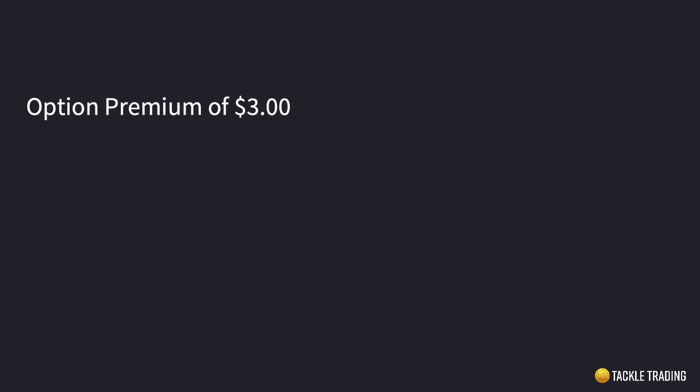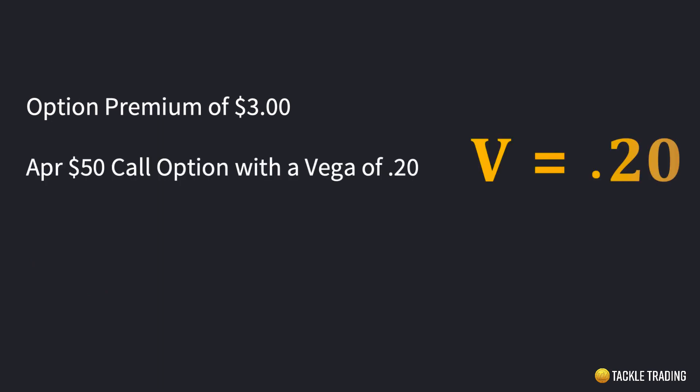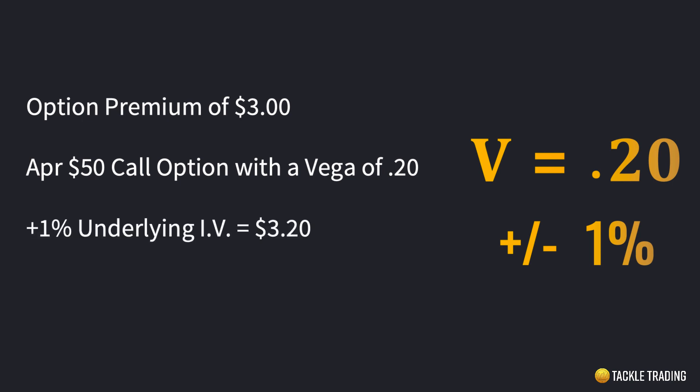If we look at an example where we have an option premium of $3 — let's say it's for an April $50 call option — and that has a Vega of 0.20, what that would mean is that the option premium would change approximately 20 cents for an increase or a decrease of 1% in the implied volatility of the underlying asset. So if we saw a 1% increase in implied volatility, the premium would go up to $3.20. If we saw a 1% decrease, we'd see the premium drop 20 cents down to $2.80.